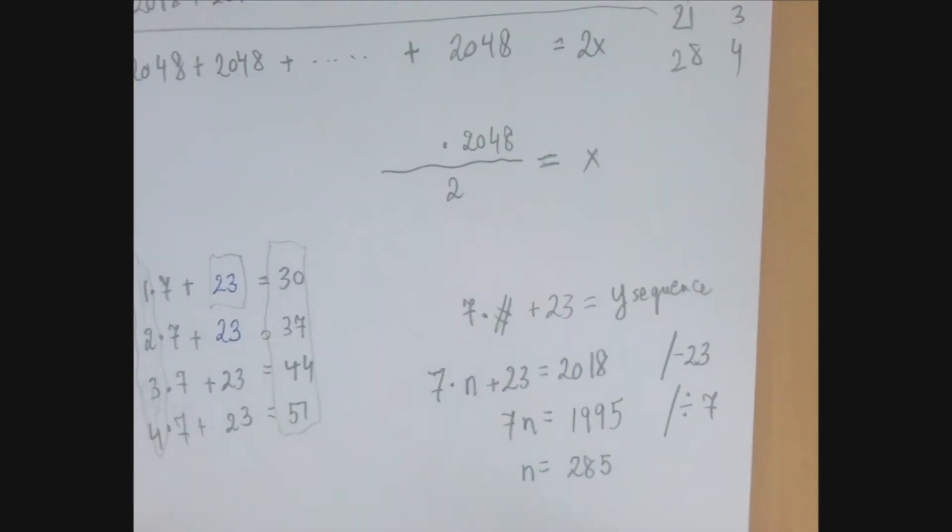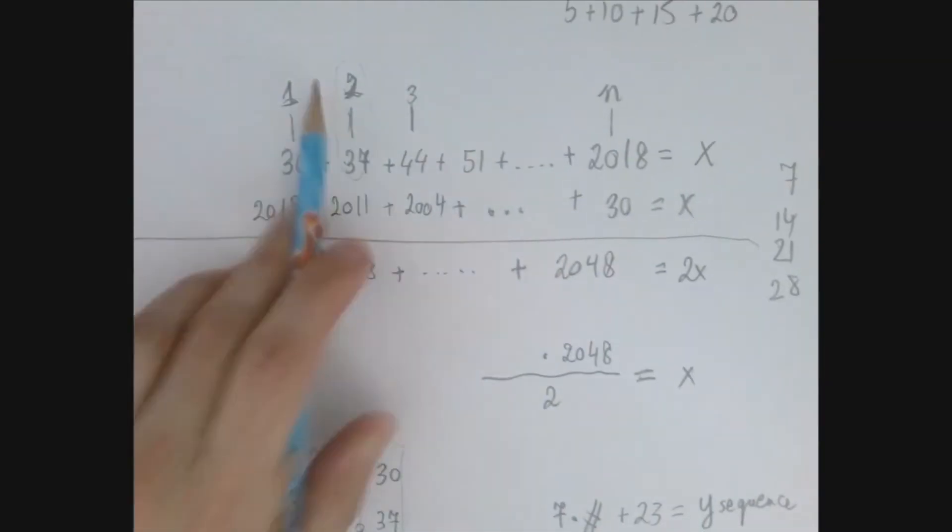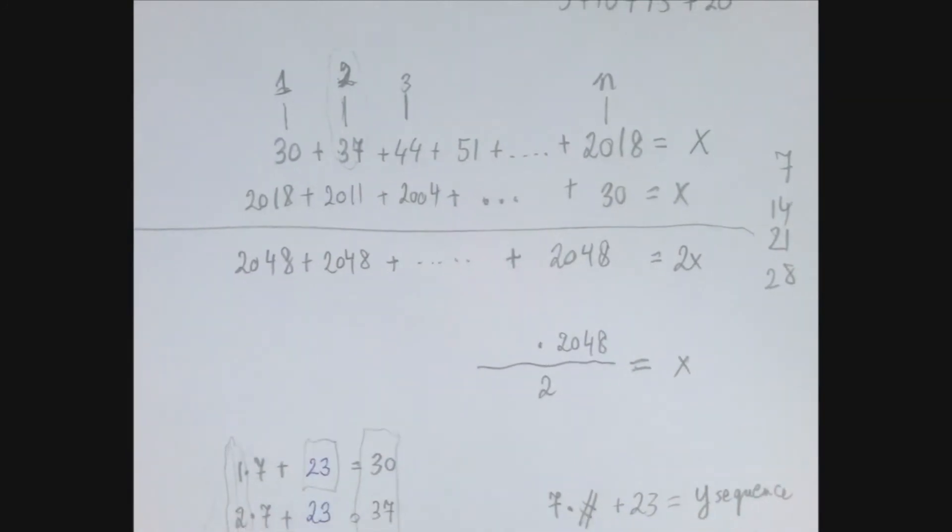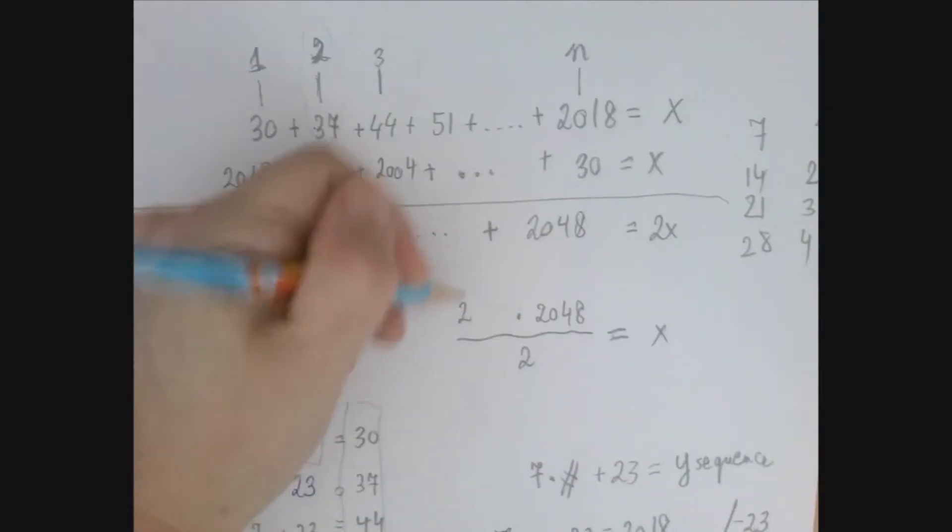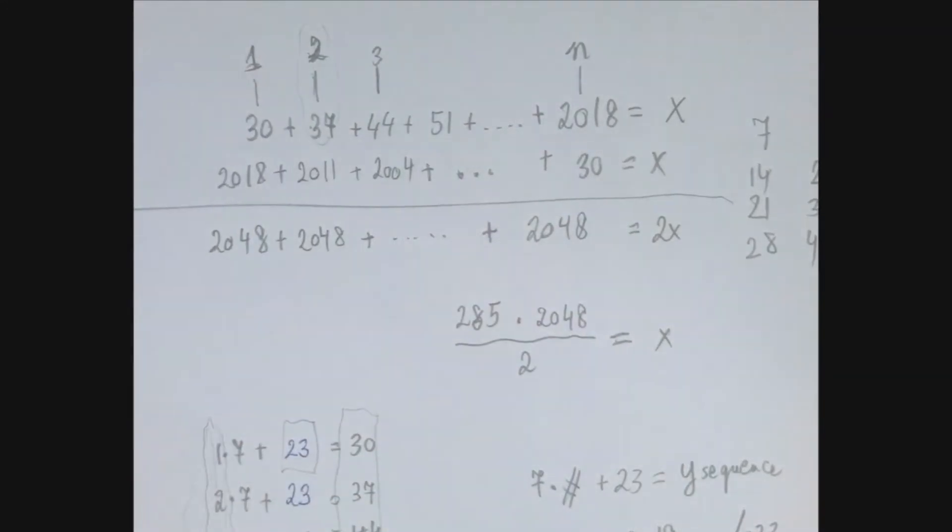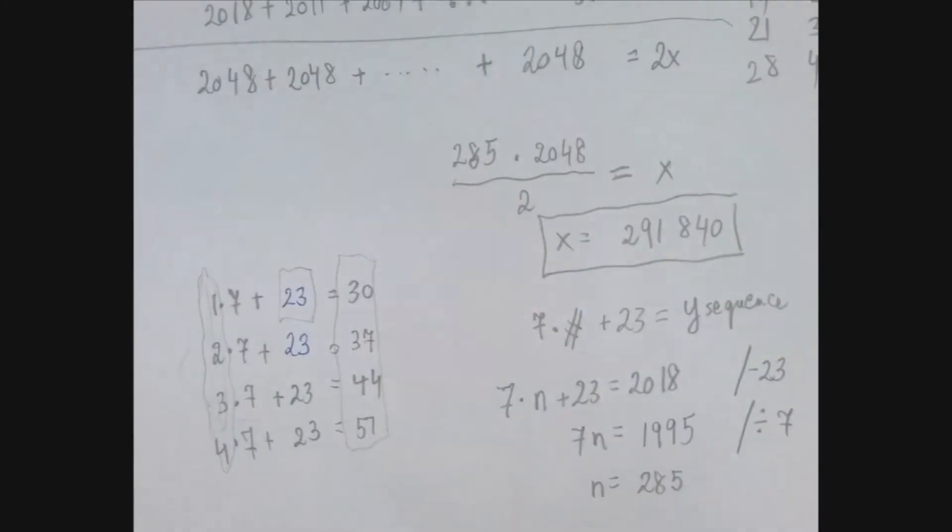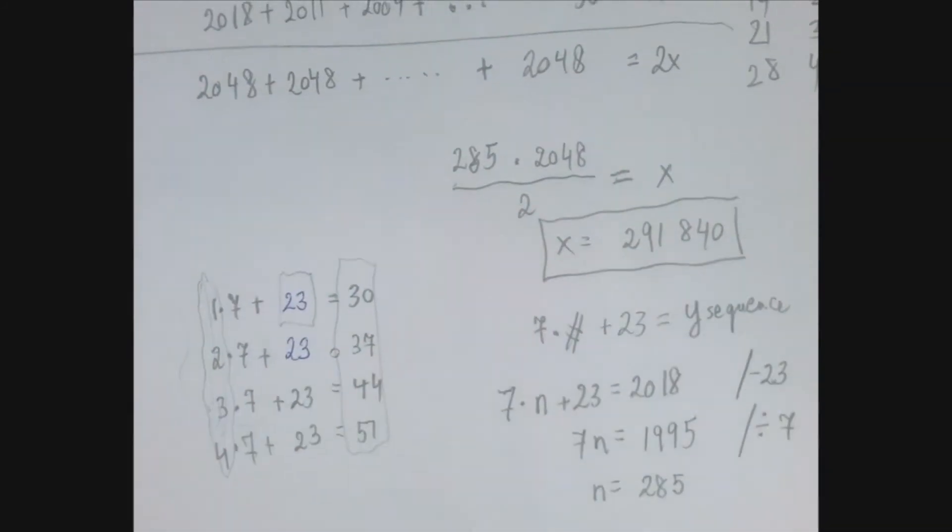So what we figured out is that when we add these numbers, that each column adds up to 2048, we have 285 many columns. And so the rest is easy. The sum is going to be 2048 multiplied by 285, and then divide it by 2. And that is 291,840. This is one method to determine how many columns are there.